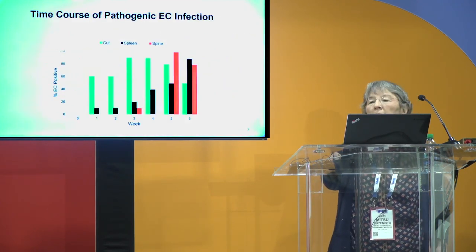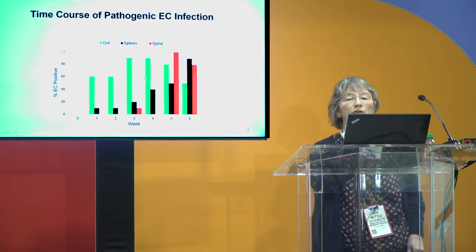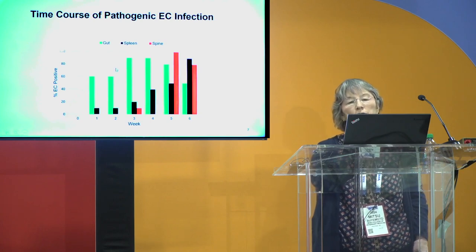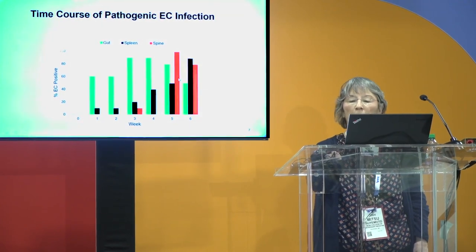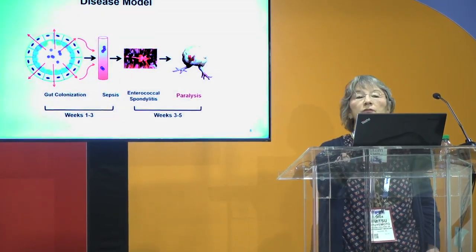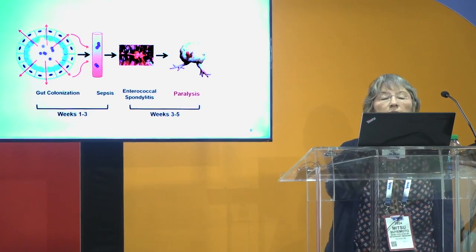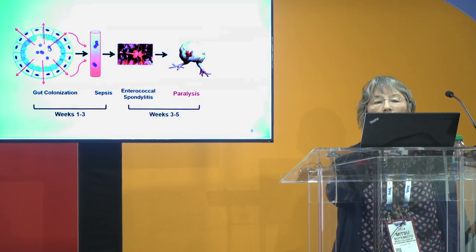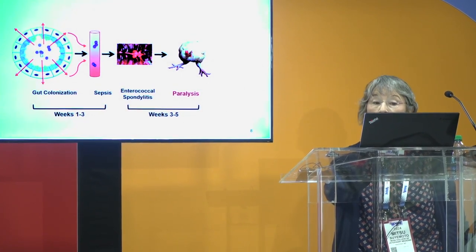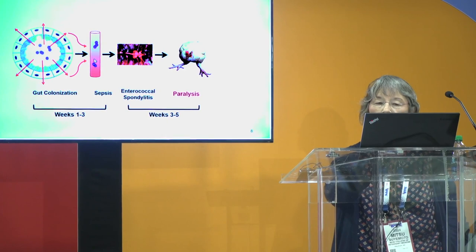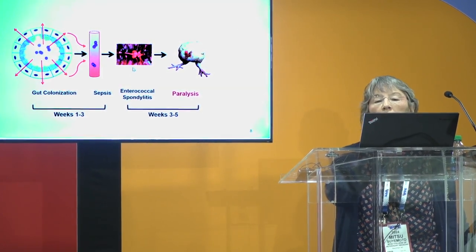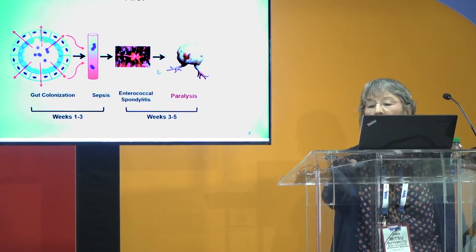Going back to the time course of pathogenic Enterococcus infection: in week one, we have positive gut cultures and spleen cultures, and then eventually we see positive spinal lesions. This leads us to our disease model — that in the very first week, birds are colonized in the gut with pathogenic E. cecorum. Those bacteria can escape the gut, the birds become septic, giving the pericarditis stage, and then paralysis and spondylitis begin at three weeks of age.